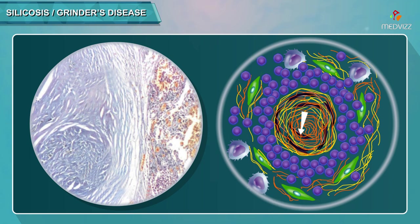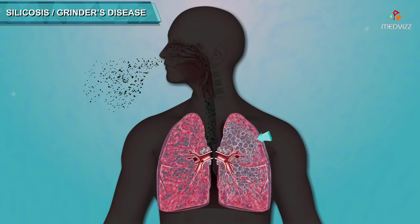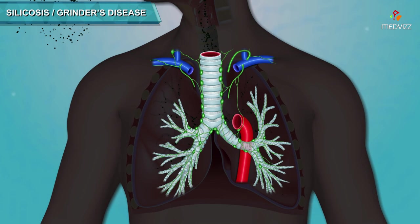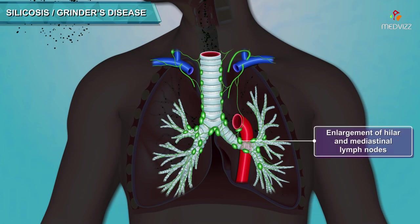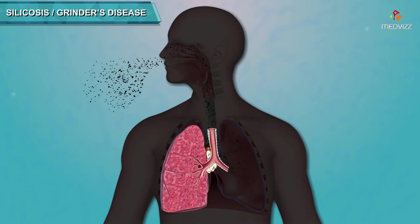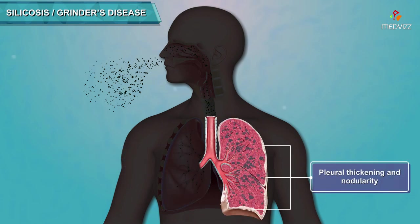Silica particles within the nodules appear as refractile, birefringent, needle-shaped silicates under polarized light microscopy. Over time, nodules gradually coalesce and the fibrotic process extends into surrounding tissue, forming a conglomerate mass with dense fibrosis — complicated conglomerate silicosis or PMF. This leads to enlargement of hilar and mediastinal lymph nodes, peripheral eggshell calcification of enlarged lymph nodes, dystrophic calcification of the conglomerate mass, and pleural thickening and nodularity.